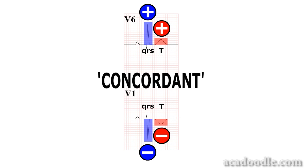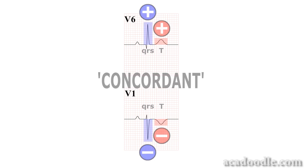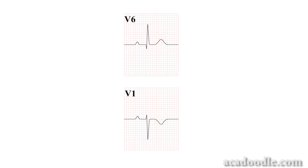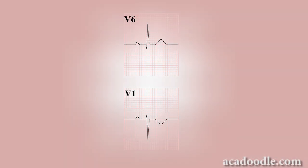There are important exceptions to this rule which we will deal with shortly. Just to tie up a loose end, atrial repolarisation produces a relatively weak electrical signal which is buried in the QRS complex and is generally not detectable on a standard 12-lead ECG.